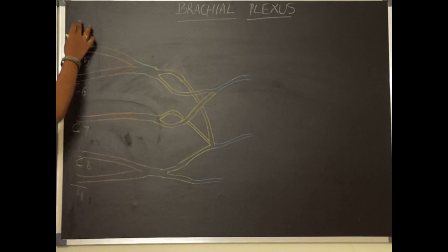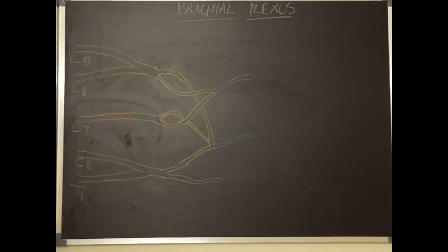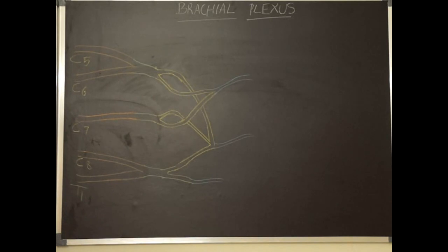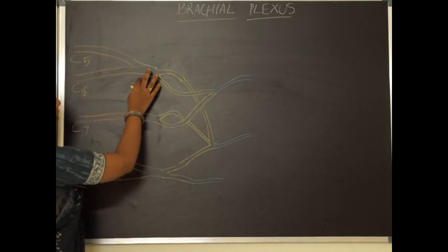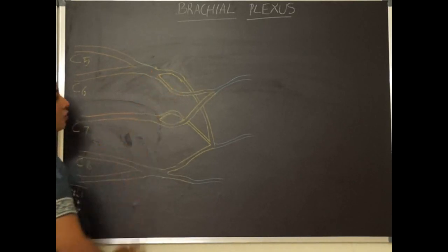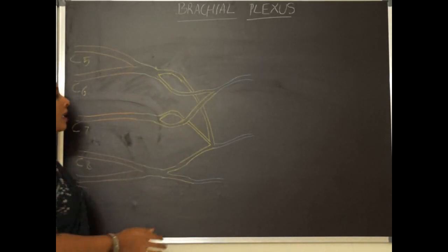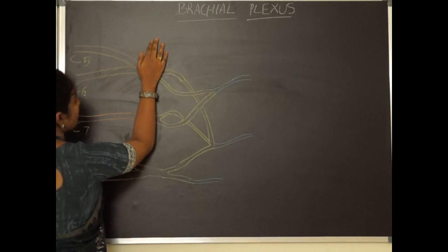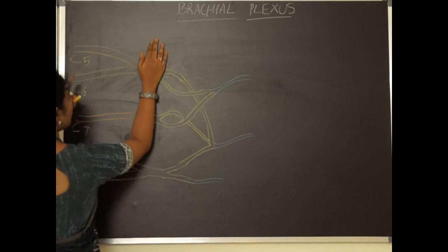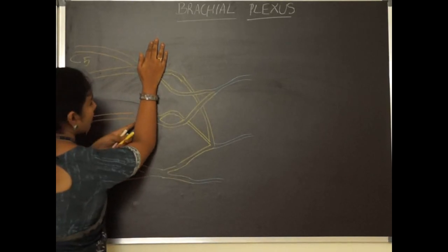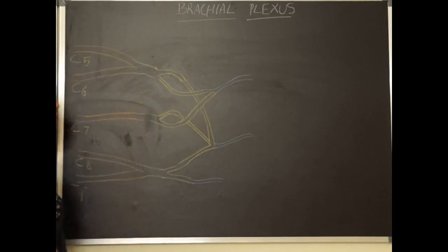If the C4 nerve contributes to brachial plexus, then it is called a pre-fixed plexus. If T2 contributes to the formation of brachial plexus, then it is called a post-fixed plexus. These roots join to form the trunks, and trunks divide to form the divisions. As they travel, they are crossed by the clavicle — suppose my hand is the clavicle — which divides the brachial plexus into a pre-clavicular part, retro-clavicular part, and infra-clavicular part.